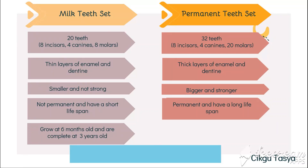Milk teeth grow at six months old and are complete at three years old, while permanent teeth start to grow at six years old and are complete at 21 years old. These are the differences between milk teeth and permanent teeth. When you are asked about a comparison, this is how you should answer your questions.